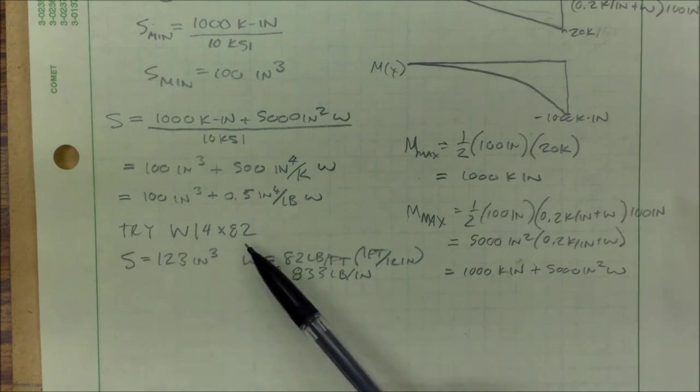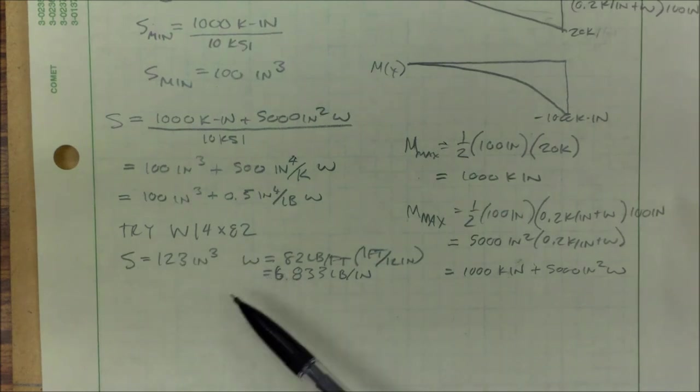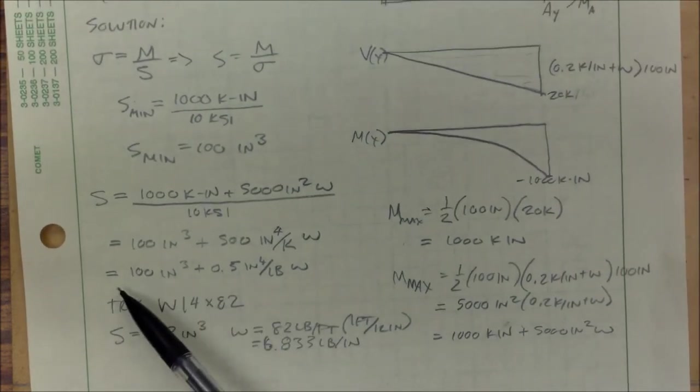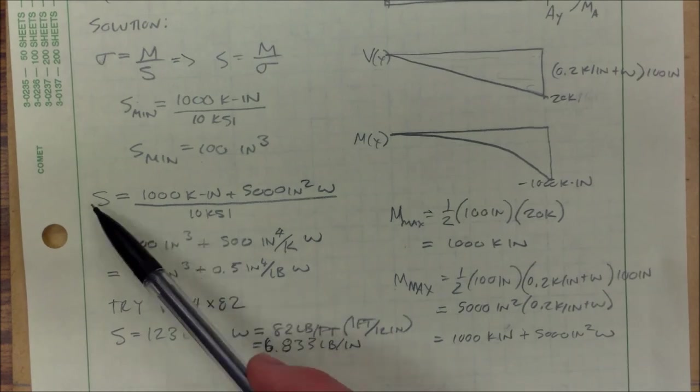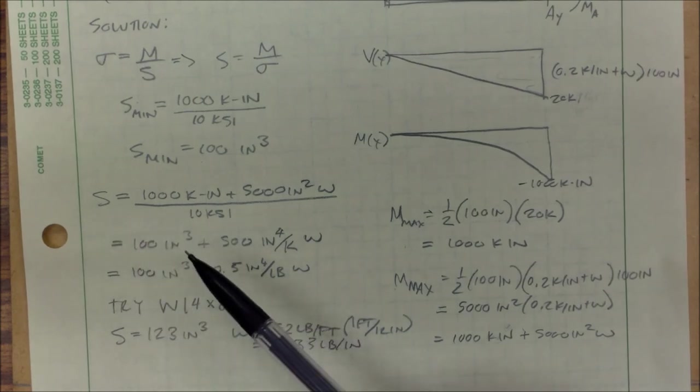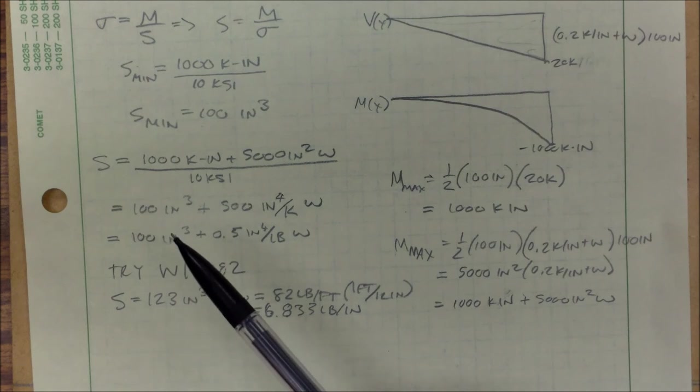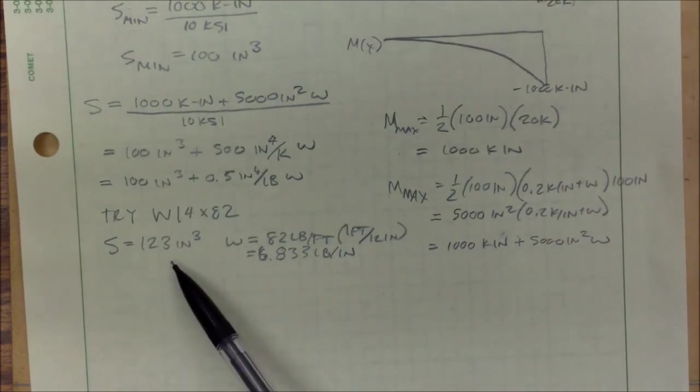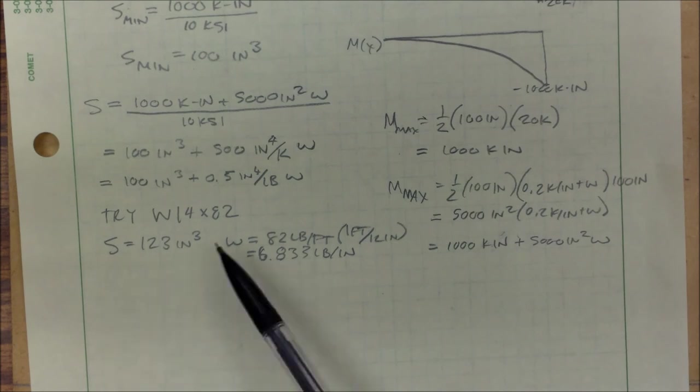So the thought process behind what I'm going to do next, I want to try this beam to see if it's going to withstand the load and its own weight. So I'm going to be putting my w into my formula, and I'm going to get a new section modulus, and that's going to be my required section modulus. And then I compare it to what I actually have, and if what I have is greater, then we're going to go.